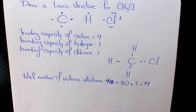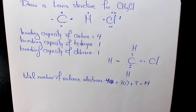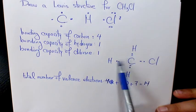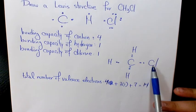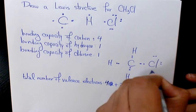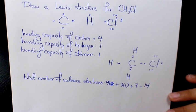Next, we place pairs of the remaining valence electrons as lone pairs on the surrounding atoms. We follow the duet rule for hydrogen and the octet rule for all others. The duet rule means hydrogen must have only two electrons, and others must have eight. Hydrogen already has two, so we're good. We need to place lone pairs on chlorine: one-two, one-two, one-two.